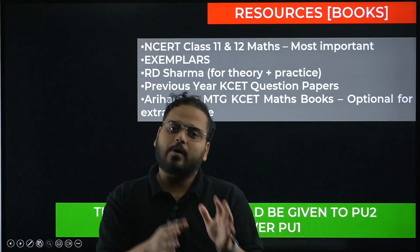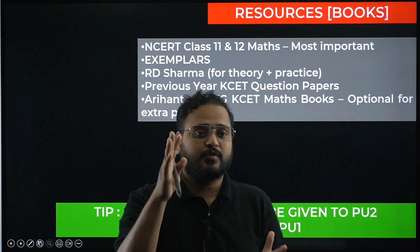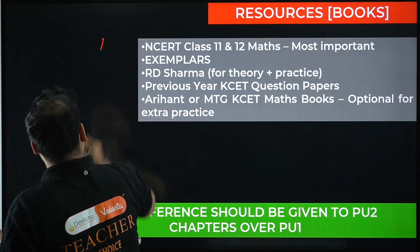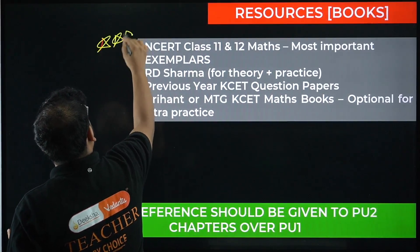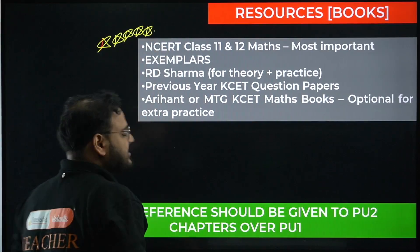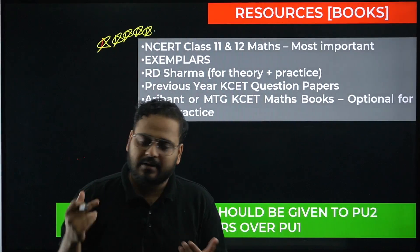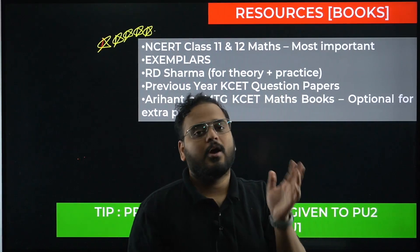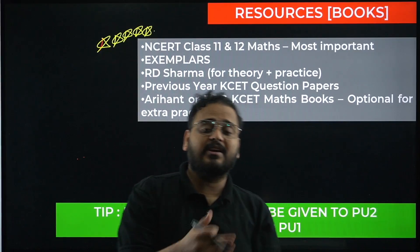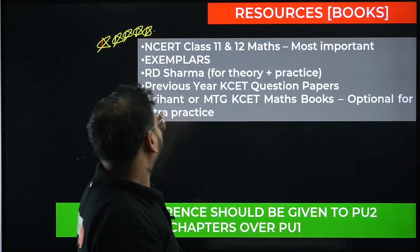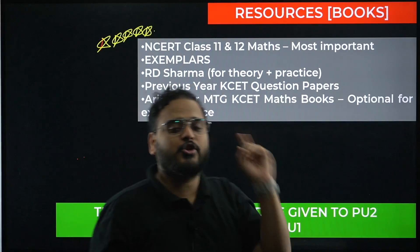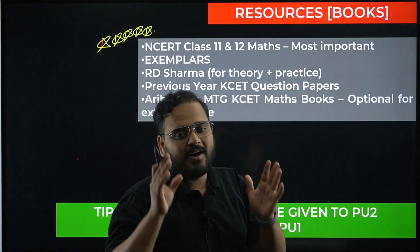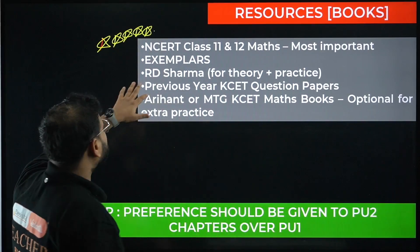Now, what books to refer? The first and most important resource is NCERT — nothing is more important than this. The syllabus is based on NCERT only. The question level will be different from board level, and you'll have to solve a variety of questions, but the syllabus content remains the same. So the first and most important book is NCERT 11th and 12th maths — it's the biggest and most essential book for this examination.